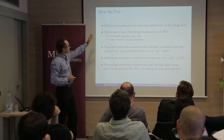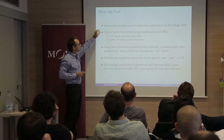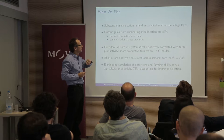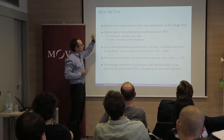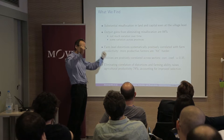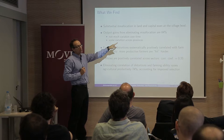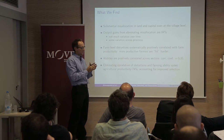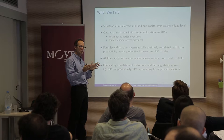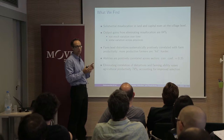Not surprisingly, we're going to find a lot of misallocation of land and capital across farmers, even within villages. The output gains from eliminating misallocation are about 84% — aggregate agricultural output and TFP would go up by 84% if we reallocated factors to their efficient levels. Part of this relatively moderate number reflects that the distribution of farmers' productivity is not very dispersed compared to other contexts.